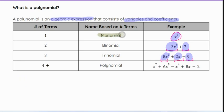So again, monomial means one term, binomial means two terms, trinomial means three terms, mono meaning one, bi meaning two, tri meaning three.